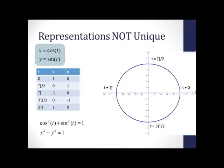Notice that when t equals zero, we're at the point one zero. And as t increases, we're moving counterclockwise until we complete the circle when t equals two pi.